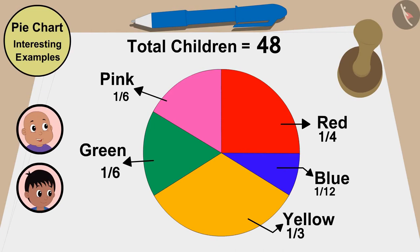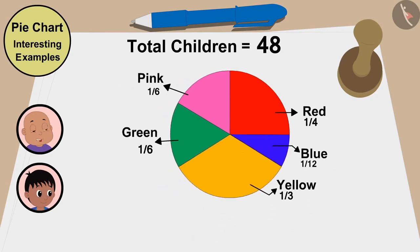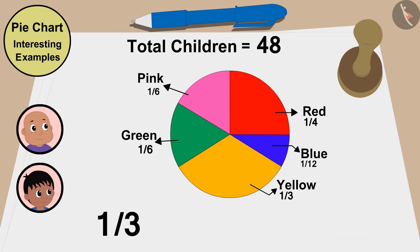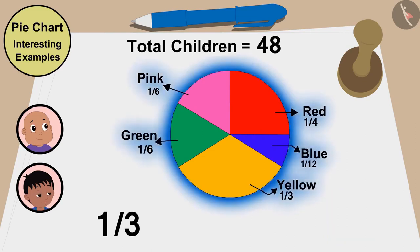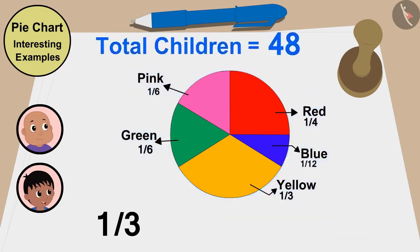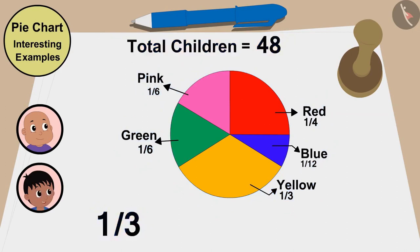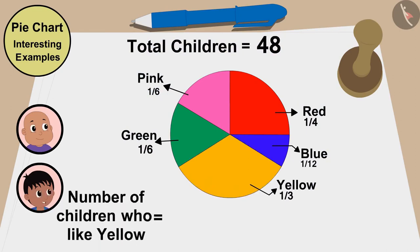Look, Raju. After seeing this pie chart, it seems that the largest number of children like yellow — this is one third of the pie chart. But how do we know how many children like this color? We created this pie chart with information from 48 children, and one third of these children liked yellow. So the number of children who like yellow will be 48 multiplied by one third, or 48 divided by 3 — that is, 16 children.